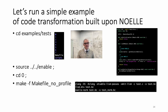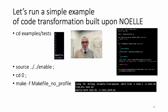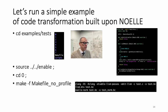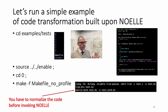We disassemble test.bc to get test.ll if you want to look at the IR by hand. Then we normalize it — this is very important. If you don't normalize it, NOEL has no systematic way to check if you have normalized the code, and NOEL assumes it is normalized, so you'll have undefined behavior. Always remember to normalize it. NOEL norm is another wrapper to OPT, so you can pass any OPT options. Here I say: noel-norm, normalize test.bc, and generate testNorm.bc — the normalized version.